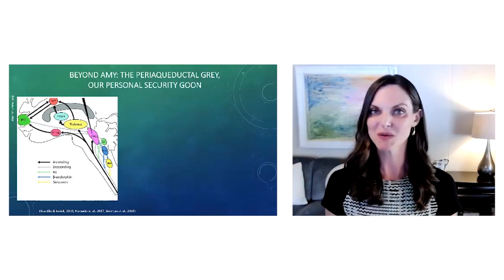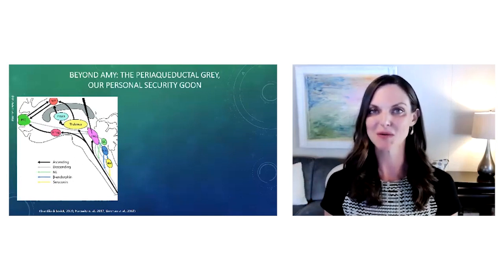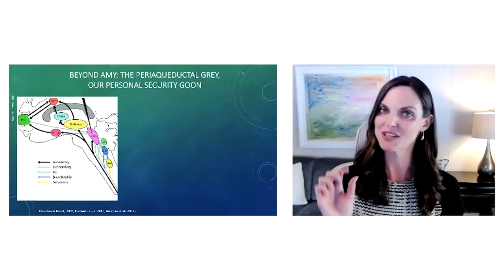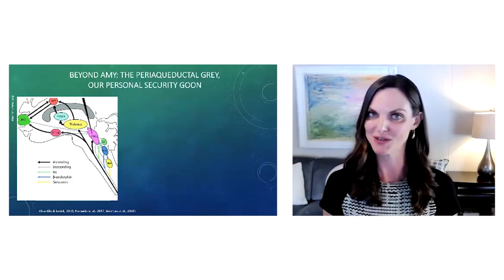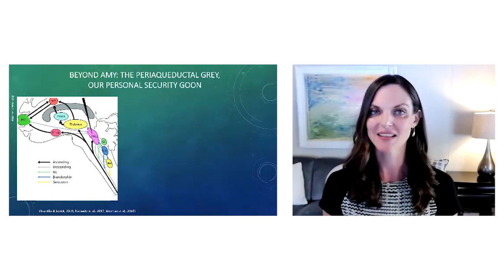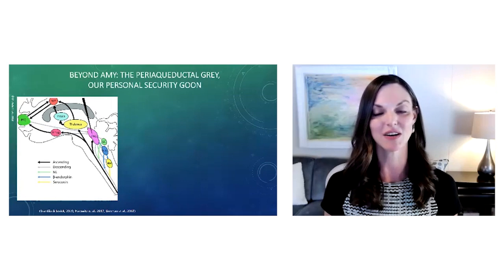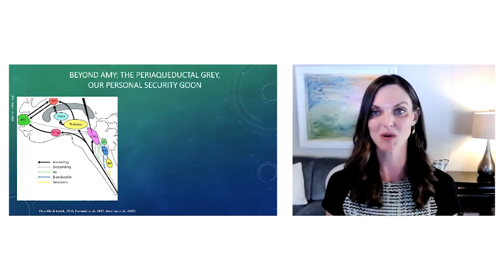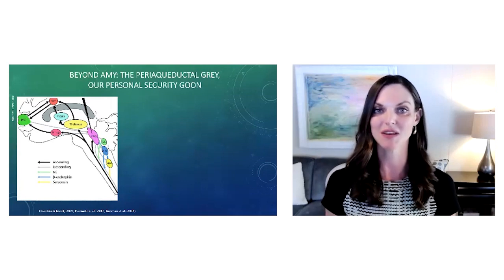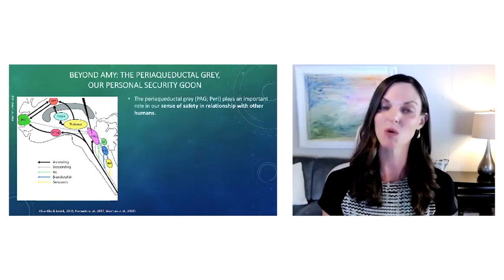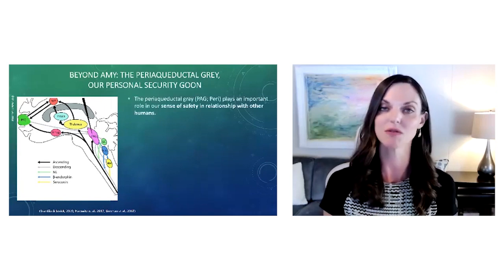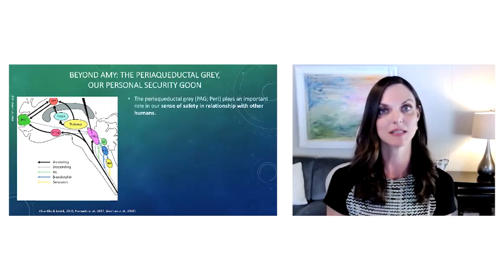Deep in the recesses of our brain, we have a tiny little ancient brain part called the periaqueductal gray. This little brain part is highly involved in our experience of the world and our relationship with humans and our ability to feel safe or unsafe with humans.